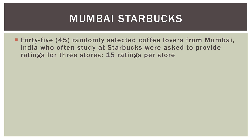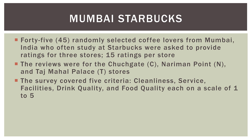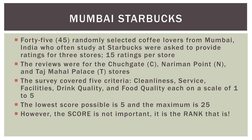The reviews were for the Churchgate, the Nariman Point, and the Taj Mahal Palace stores — we'll call those C, N, and T respectively. The survey covered five criteria: cleanliness, service, facilities, drink quality, and food quality, each on a scale of one to five. The lowest score possible is five and the maximum is 25. However, the score itself is not really important in this Kruskal-Wallis test — it's the rank that is important.